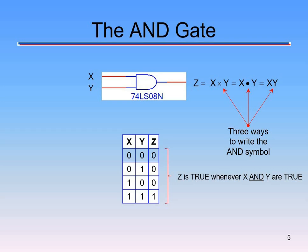For a three-input AND gate to produce a one, all three inputs must be one — if any one of them is zero, the output will be zero. We always write the inputs in this order: zero-zero, zero-one, one-zero, one-one. That's us counting from zero to three in binary: zero-zero is zero, zero-one is one, one-zero is two, and one-one is three.